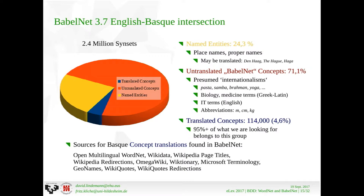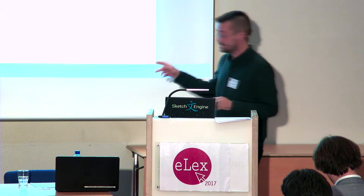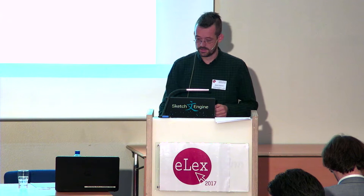For English-Basque in BabelNet we get a huge pool of 2.4 million synsets. But the vast majority — 71% — are what BabelNet considers internationalisms with global value, so they are Basque lexicalizations by default: things like pasta, samba, brahman, yoga, biology terms, medicine terms, IT terms, and abbreviations. The yellow part are named entities, which may be translated — like Den Haag / The Hague / Haga in Basque. But 95% of what we are looking for is in the blue part, which is relatively small but still has 114,000 concepts coming from Open Multilingual WordNet and a bunch of other sources.